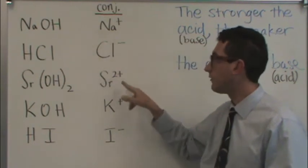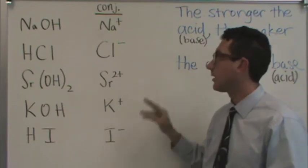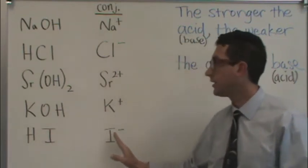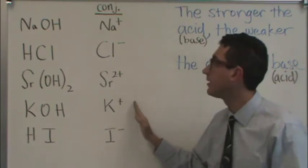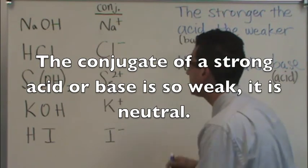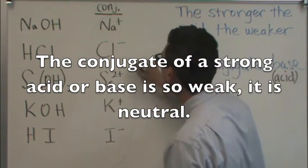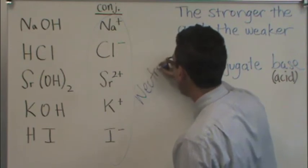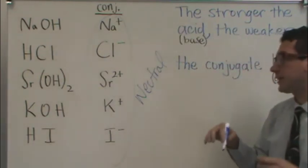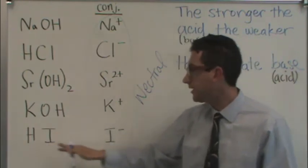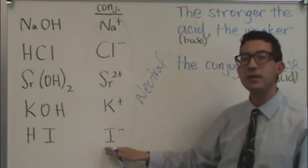And that's going to be true of all of these. In general, we would say the conjugate of a strong is so weak that it is effectively neutral. So all of these here, all of these conjugates are neutral. Why? Because that's the weakest they could possibly be. So if this is an acid, its conjugate base is so weak, it's neutral.